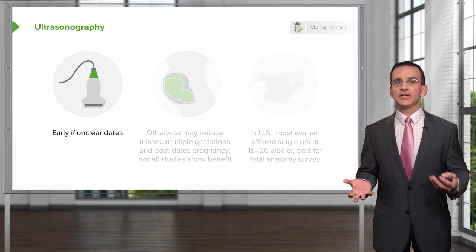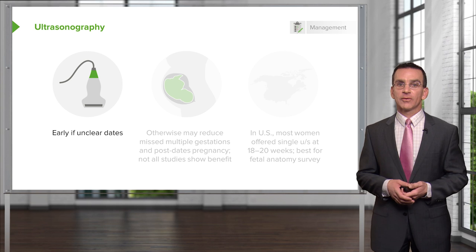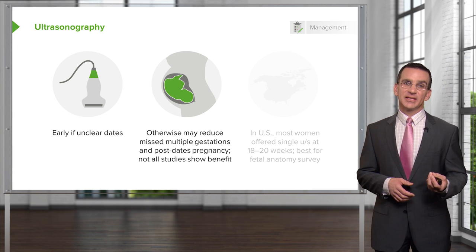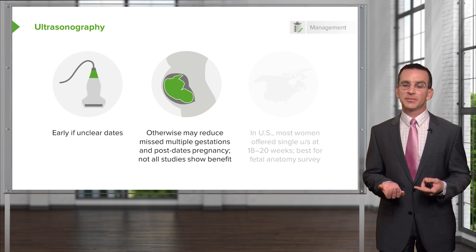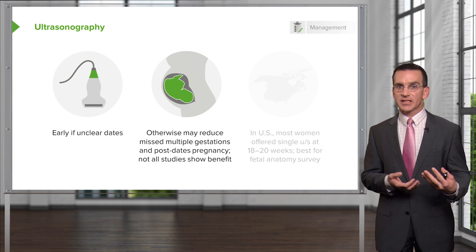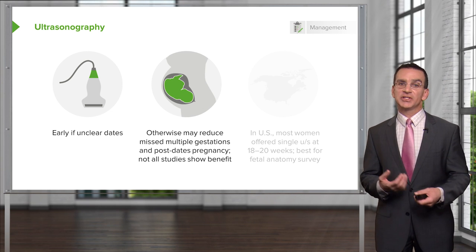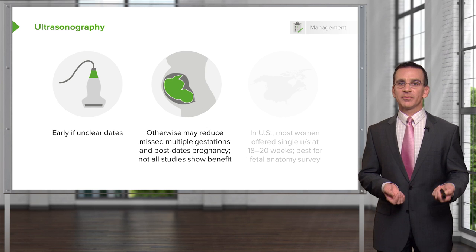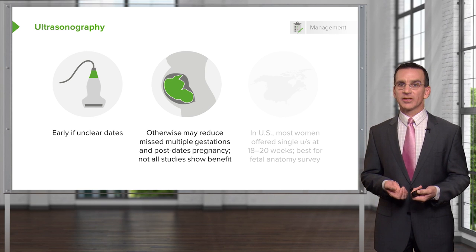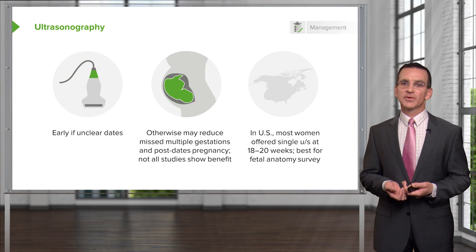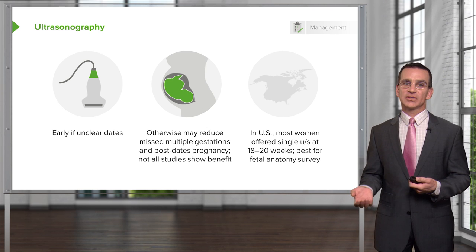Regarding ultrasonography: if dates are unclear, that's an indication for immediate referral for a sonogram. Routine ultrasonography reduces the chance of missed multiple gestations and reduces risk of post-dates pregnancy, though not every study has demonstrated clear benefit. Pregnancy is a natural process, not a disease state. In the United States, most women are offered a single ultrasound at 18 to 20 weeks — the best time for a fetal anatomy survey and screening for aneuploidy.